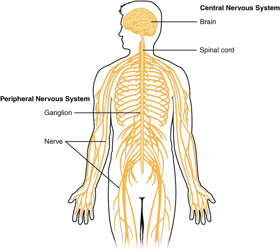Mammals, which appear in the fossil record after the first fishes, amphibians, and reptiles, are the only vertebrates to possess the evolutionarily recent outermost part of the cerebral cortex known as the neocortex. The neocortex of monotremes — the duck-billed platypus and several species of spiny anteaters — and of marsupials such as kangaroos, koalas, opossums, wombats, and Tasmanian devils lack the convolutions, gyri and sulci, found in the neocortex of most placental mammals. Within placental mammals, the size and complexity of the neocortex increased over time. The area of the neocortex of mice is only about one one-hundredth that of monkeys, and that of monkeys is only about one-tenth that of humans.